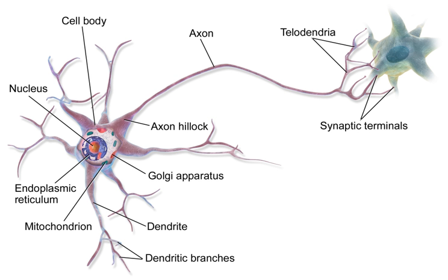The part of the axon where it emerges from the soma is called the axon hillock. Besides being an anatomical structure, the axon hillock is also the part of the neuron that has the greatest density of voltage-dependent sodium channels, making it the most easily excited part of the neuron and the spike initiation zone for the axon. In electrophysiological terms, it has the most negative action potential threshold. While the axon and axon hillock are generally involved in information outflow, this region can also receive input from other neurons. The axon terminal contains synapses, specialized structures where neurotransmitter chemicals are released to communicate with target neurons.